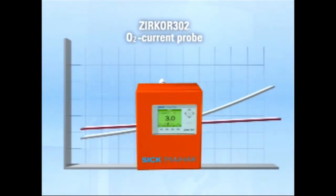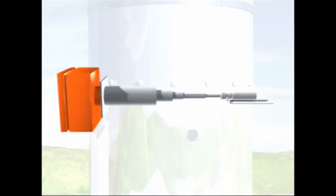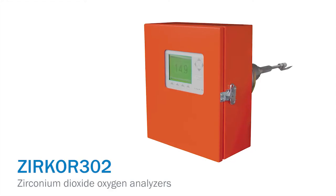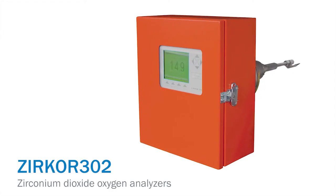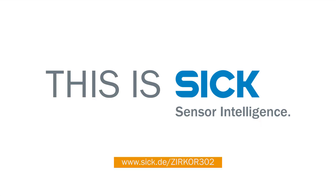The higher purchase cost of the current probe Circor 302 is recovered within a short period of time. Circor 302: cutting-edge technology for oxygen measurement in flue gas for all combustion and incineration processes.